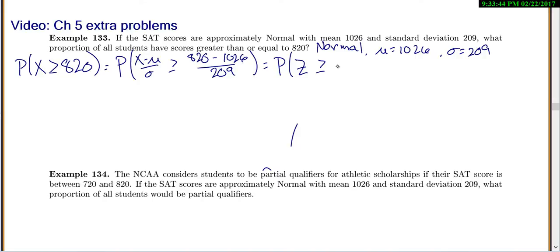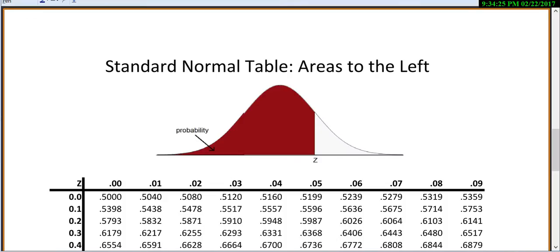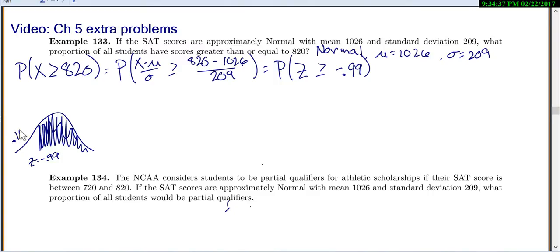So Z is greater than or equal to negative 0.99. I prefer to just draw a picture. Z of negative 0.99 would be here — I'm looking for the probability that you're greater than that, so going to the right. I'm looking for the area to the right. Go to the table, look up negative 0.99 — that's 0.1611. But we wanted the area to the right, so it's 1 minus 0.1611, which gives 0.8389.